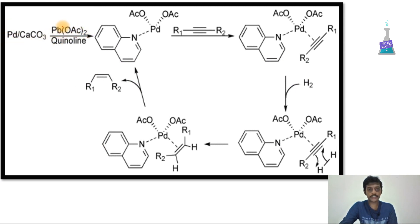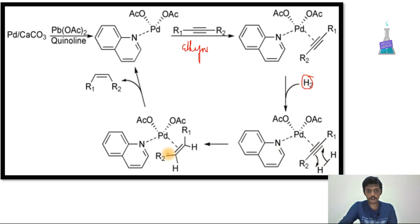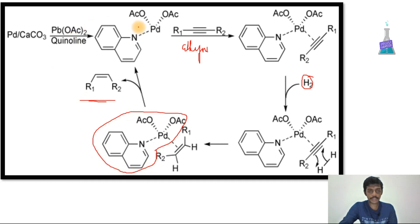In the mechanism, palladium over calcium carbonate is present. Lead acetate (Pb(OAc)₂) and quinoline are added. You can see palladium is substituted with the acetate group and the quinoline group. The alkyne is then adsorbed onto the surface. Hydrogen is added, and palladium facilitates the addition to the alkyne, forming the cis alkene. The complex is then deactivated, giving the final cis alkene product.